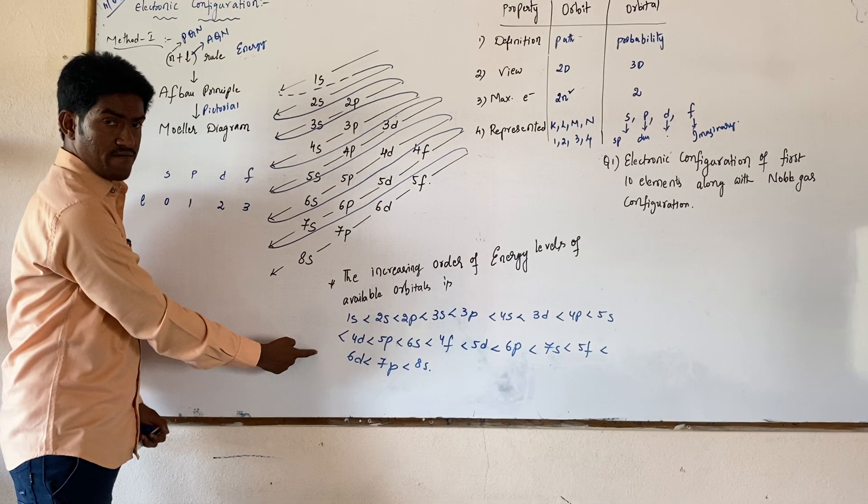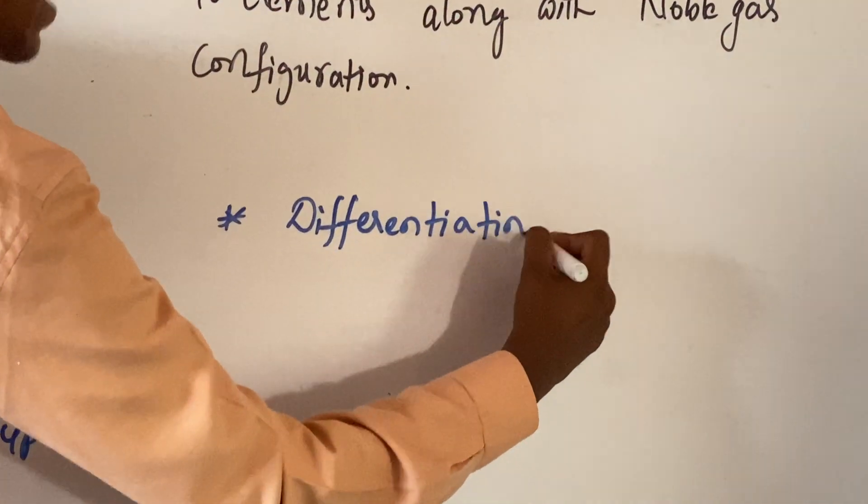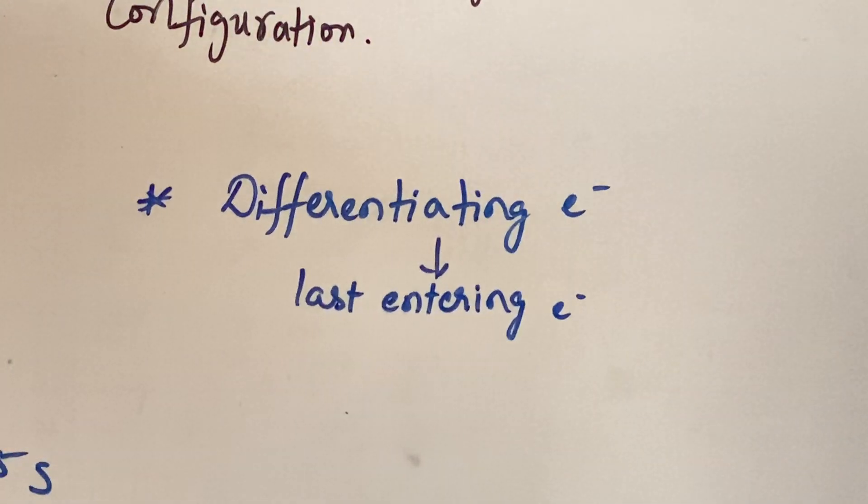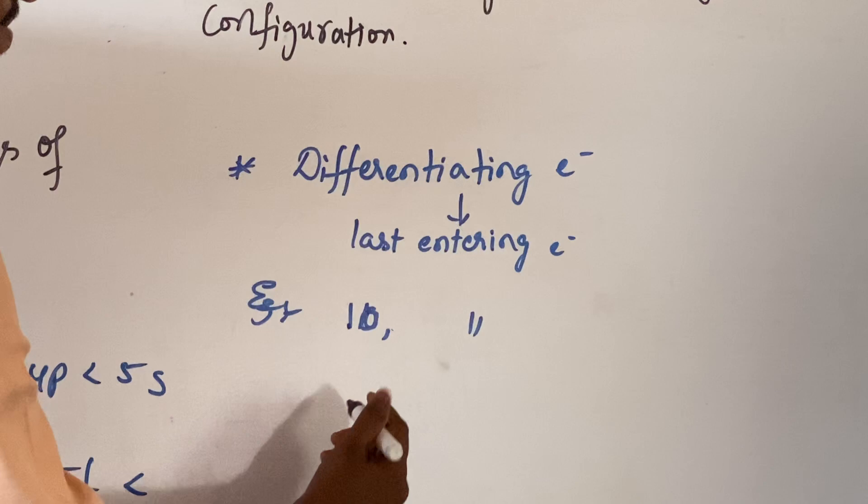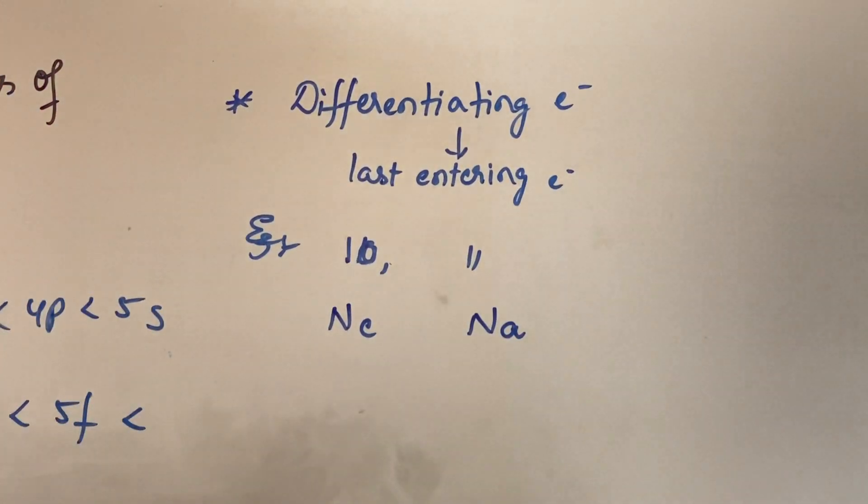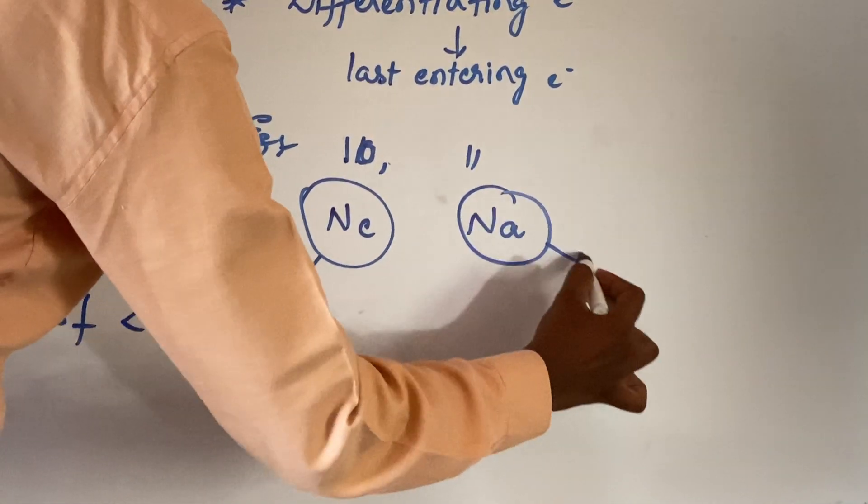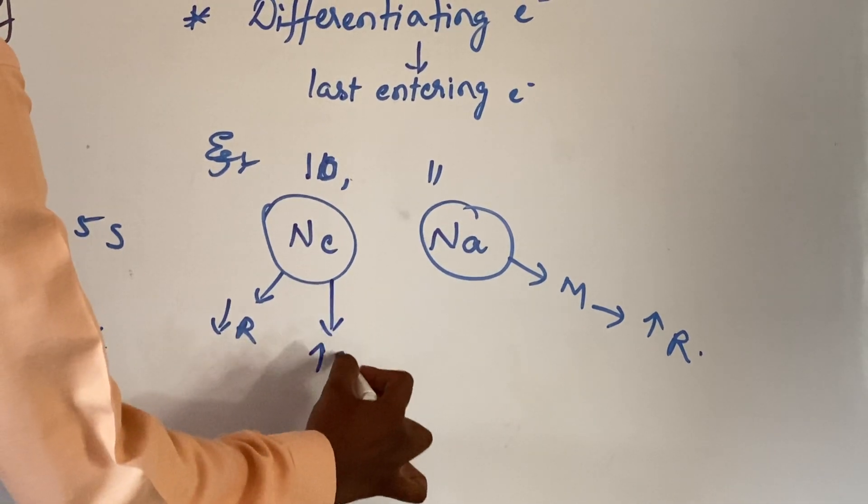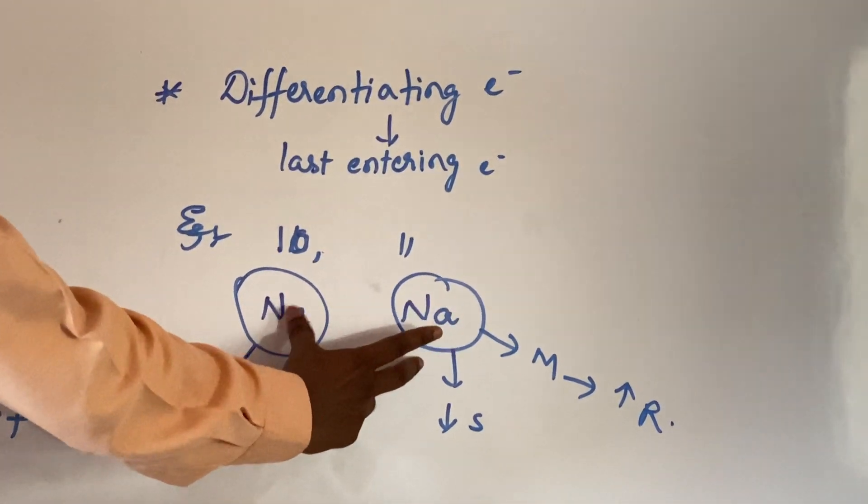The last entering electron is known as differentiating electron. The differentiating electron plays an important role to define the chemical property of any element. While taking an example, the 10th electron and the 11th electron. The difference between the two successive elements is one electron. The 10th electron enters into neon. The 11th electron represents sodium. Due to the difference in one electron, neon means noble gas and chemically not reactive. And the sodium is a metal and chemically more reactive. Neon is having greater stability and sodium can have less stability. Due to the difference in one electron, there may be difference in the physical properties along with the chemical properties.